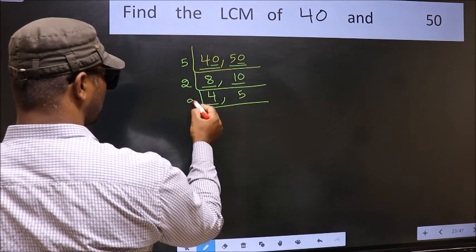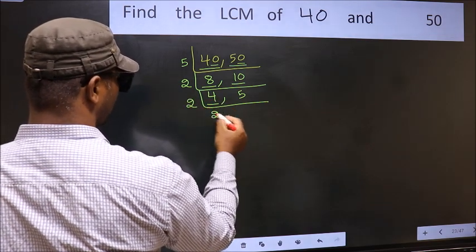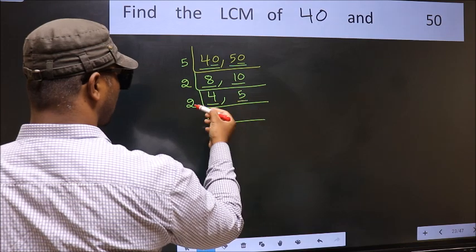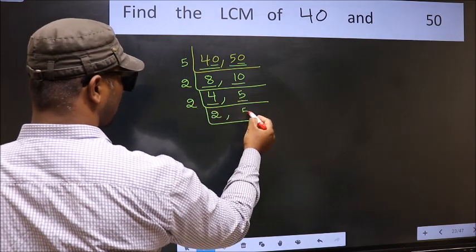Now here we have 4. 4 is 2 times 2 is 4. The other number 5, not divisible by 2, so we write it down as it is.